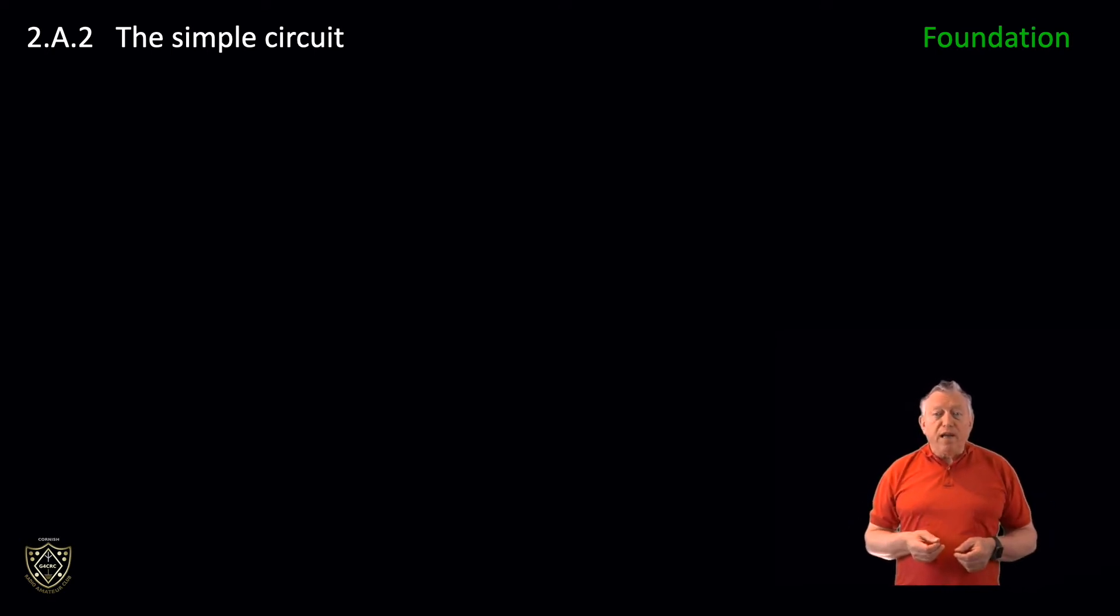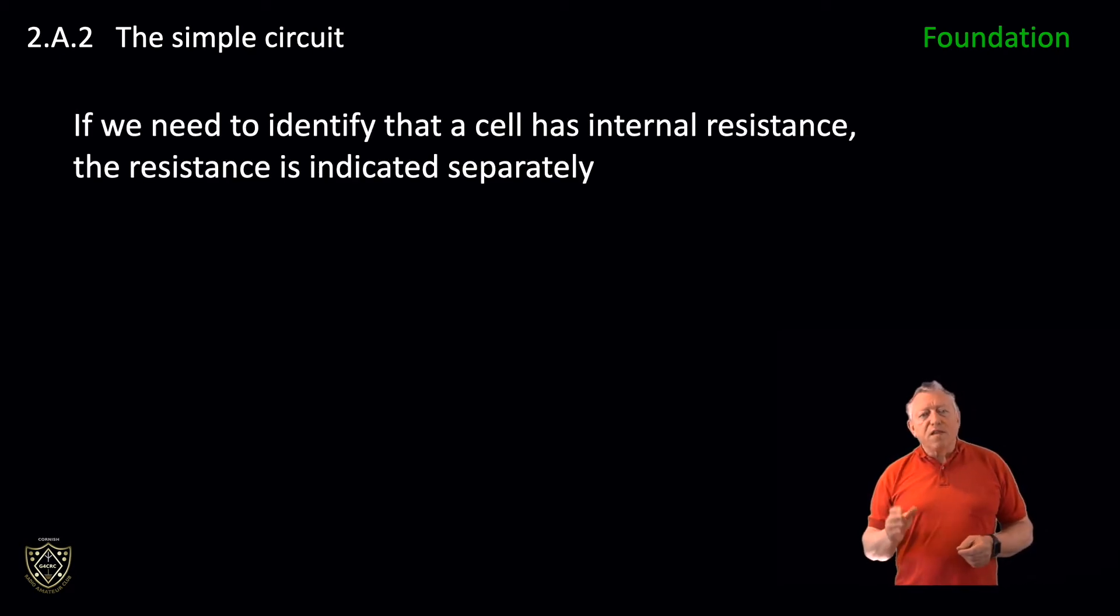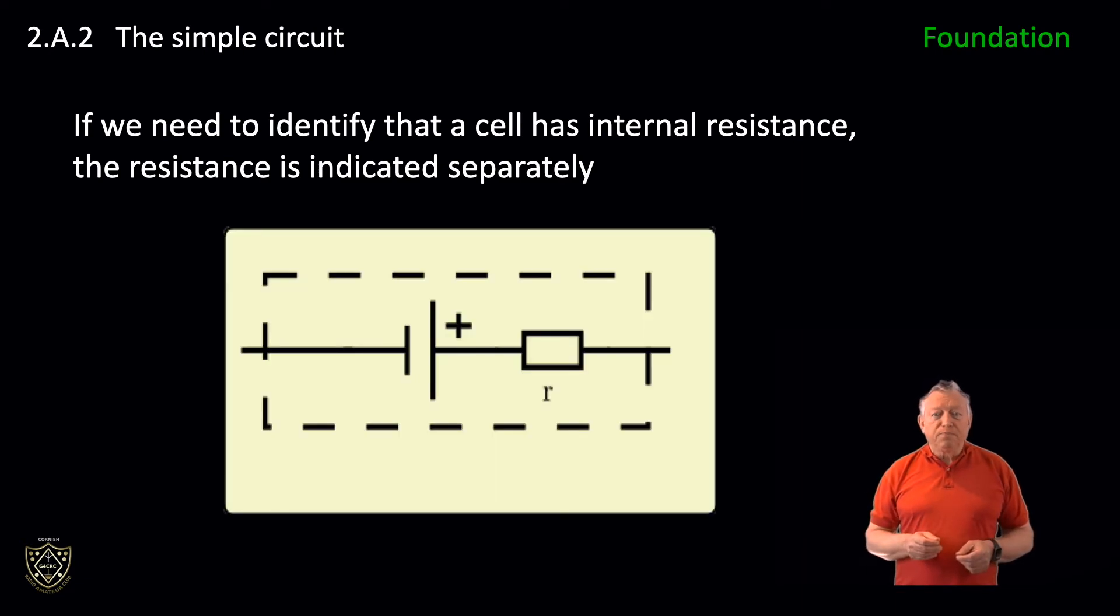If, for example, we need to identify that a cell has internal or source resistance, the resistance is indicated separately, as shown on screen. And by the way, we will cover source resistance at intermediate level in video 2C3.